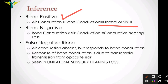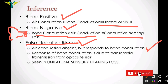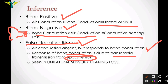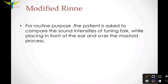Rinne's positive means air conduction is greater than bone conduction — that is normal — or it can also be seen in cases of sensorineural hearing loss. Rinne's negative is seen when bone conduction is greater than air conduction, or in cases of conductive hearing loss, that means when the external auditory canal is blocked. False negative Rinne's test: in this, air conduction is absent but it responds to bone conduction, and this response is due to transcranial transmission from the opposite ear. This is seen in unilateral sensorineural hearing loss. There is also the modified Rinne's test, used for routine purposes, where the patient is asked to compare the sound intensities of the tuning fork while placing it in front of the ear and over the mastoid process.